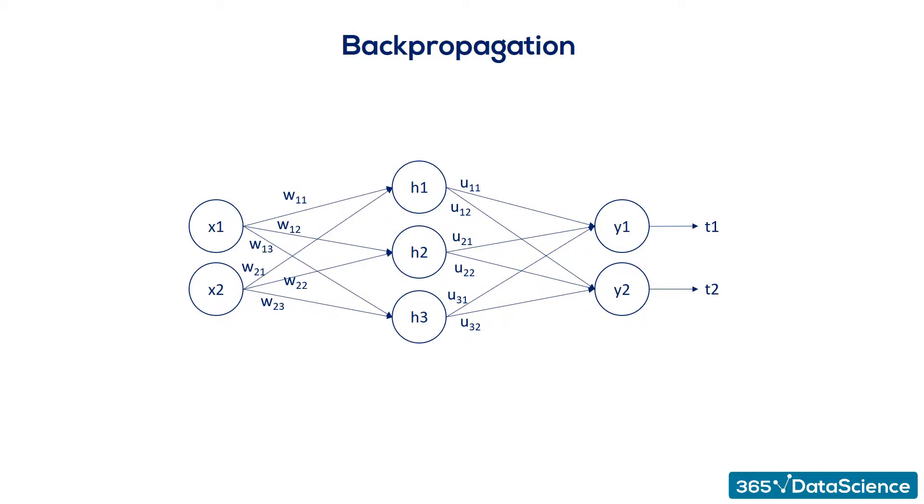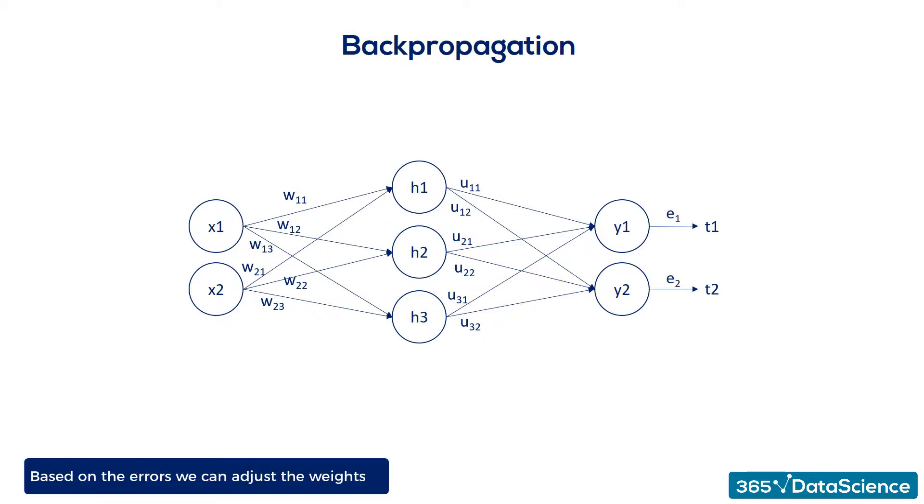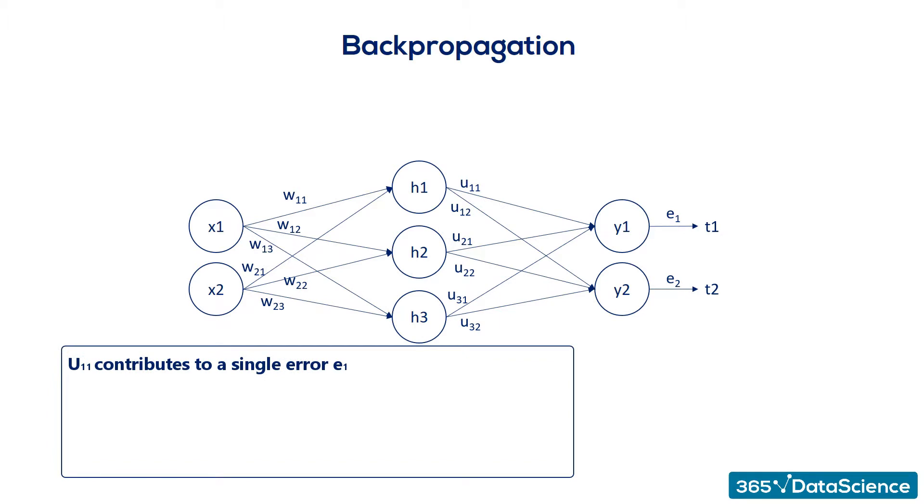We know the error associated with Y1 and Y2, as it depends on known targets. So, let's call the two errors E1 and E2. Based on them, we can adjust the weights labeled with U. Each U contributes to a single error. For example, U11 contributes to E1. Then, we find its derivative and update the coefficient. Nothing new here.